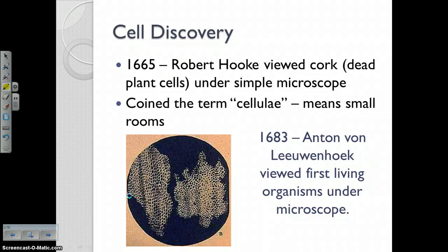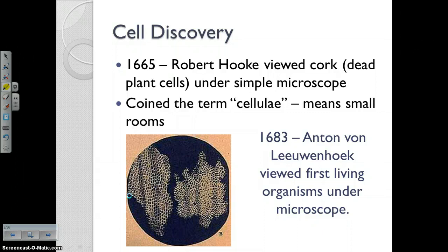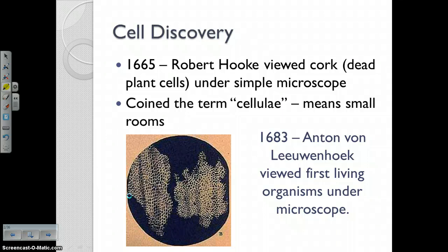Then in 1683, you had Anton van Leeuwenhoek, who was the first scientist to really view a living organism underneath a microscope. He took pond water and put it under the microscope, and he saw little animal-like organisms that he called animalcules — like molecules, but animals. We call them today protozoans, which are animal-like protists. So he probably saw amoebas, and he probably saw plant-like protists like algae.